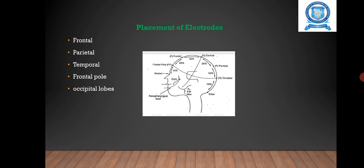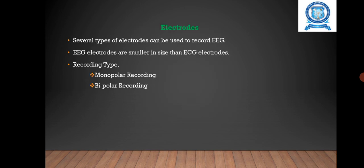Then we are going to see the electrodes. Several types of electrodes can be used to record EEG. This will include peel and stick electrodes, silver plated cup electrodes, and needle electrodes. The EEG electrodes are similar in size to ECG electrodes.